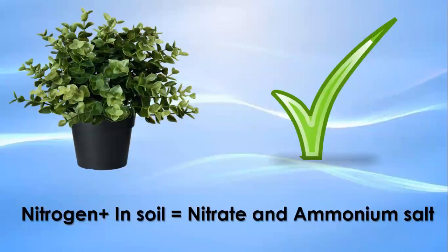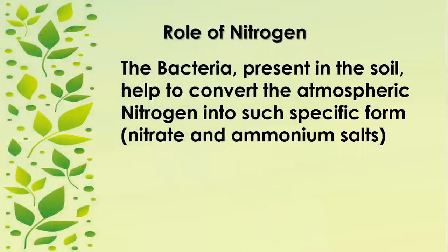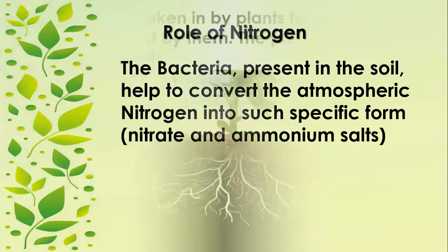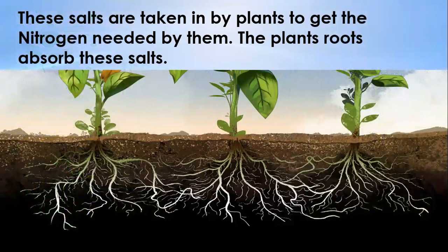Nitrogen in soil is converted into nitrates and ammonium salts. The bacteria present in the soil help to convert atmospheric nitrogen into these specific forms — nitrates and ammonium salts. These salts are then taken in by plants to get the nitrogen needed by them, absorbed through the plant roots.